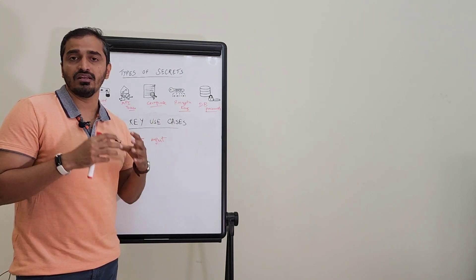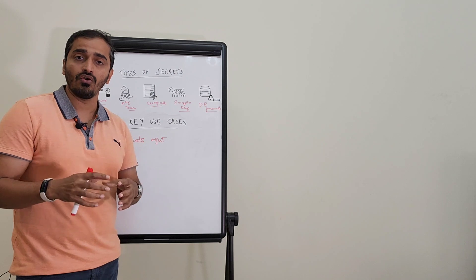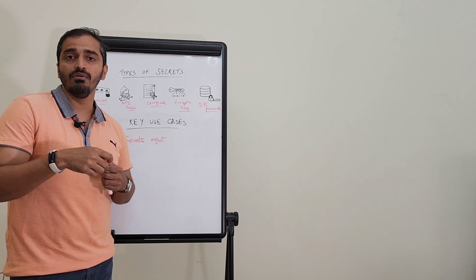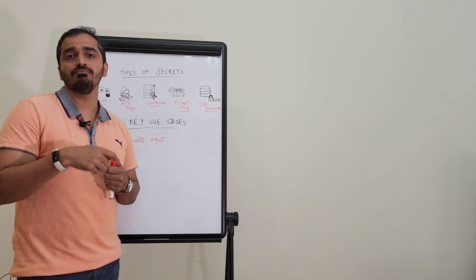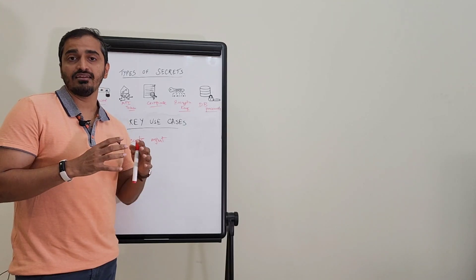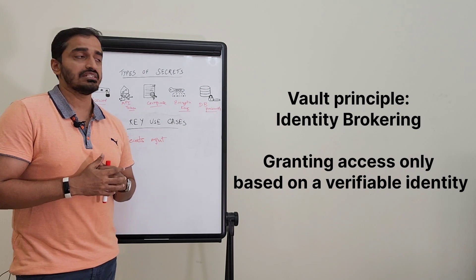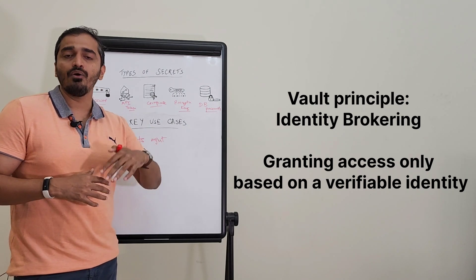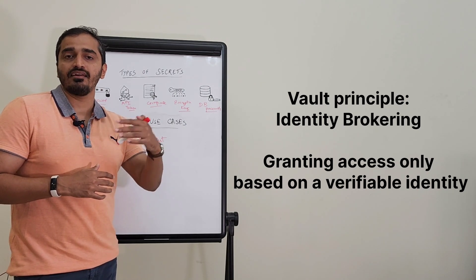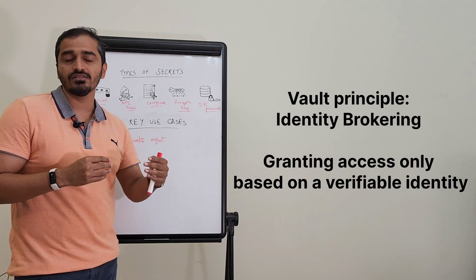Secrets are only available to those who give a legitimate reason based on identity. Vault always looks at the entire picture from the perspective of identity brokering, which is essentially a concept of allowing someone based on their identity, no matter who it is—whether the person is accessing an application, whether an application is trying to access a secret or a database.